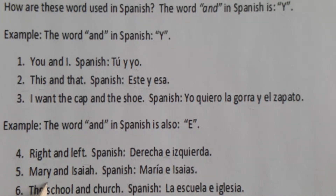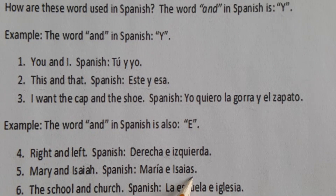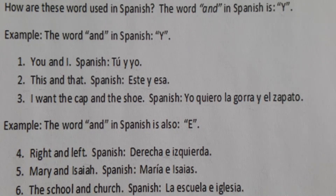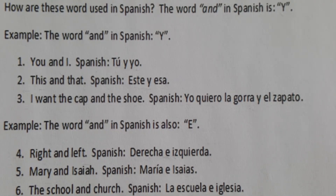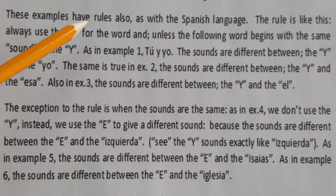Número cinco: 'Mary and Isaiah' — in Spanish, 'María e Isaías.' Número seis: 'the school and church' — in Spanish, 'la escuela e iglesia.' La escuela e iglesia.